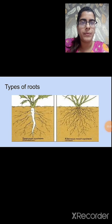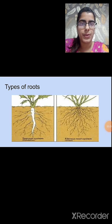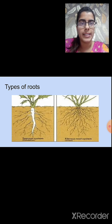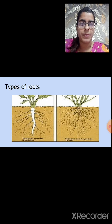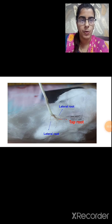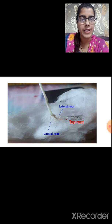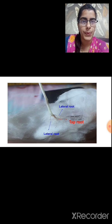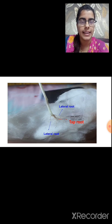In fibrous root, there is no main root as in tap root — all the roots look similar. Onions, tomato, sweet corn, peas, etc. are examples of plants with a fibrous root system. Looking at the slide, the moong plant has a tap root — you can observe the main root in the middle and the lateral roots.